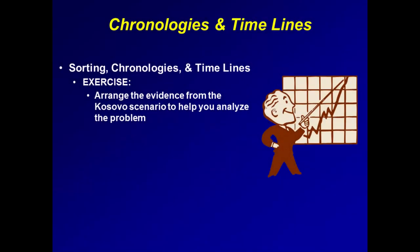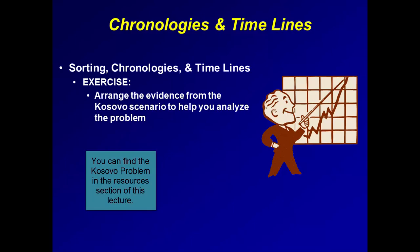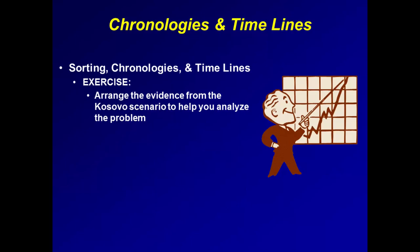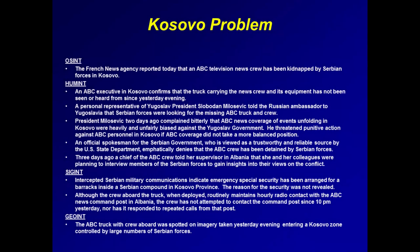Let's apply what you've learned from these techniques to an intelligence scenario. I've supplied the Kosovo problem as a resource to this lecture. Sort the evidence from the Kosovo problem by type of intelligence source. You may pause the video to give yourself more time. Does your sorting of the evidence from the Kosovo problem look similar to this?